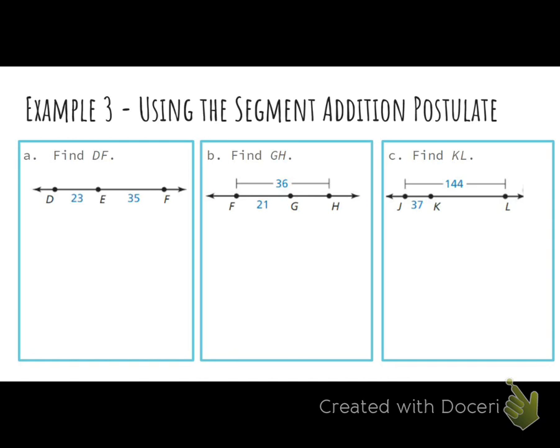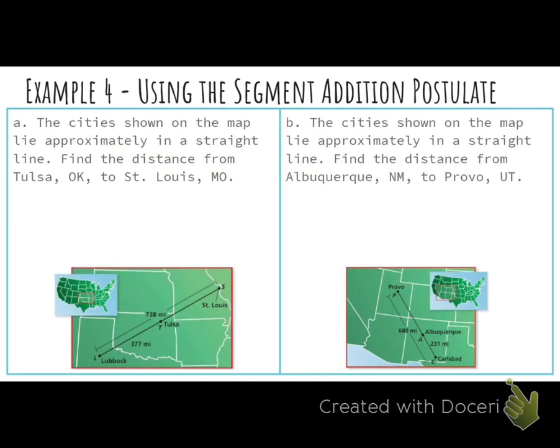Next one up. This is our example four, and it's our last example. You have one question on your homework like this. So the cities shown on the map lie approximately on a straight line. Find the distance from Tulsa, Oklahoma to St. Louis, Missouri. So we want to find the distance from Tulsa to St. Louis. I'm going to abbreviate this based on the first letters. So we have the distance from Lubbock to St. Louis. I'm going to call that L-S. Lubbock to St. Louis equals the sum of its parts.